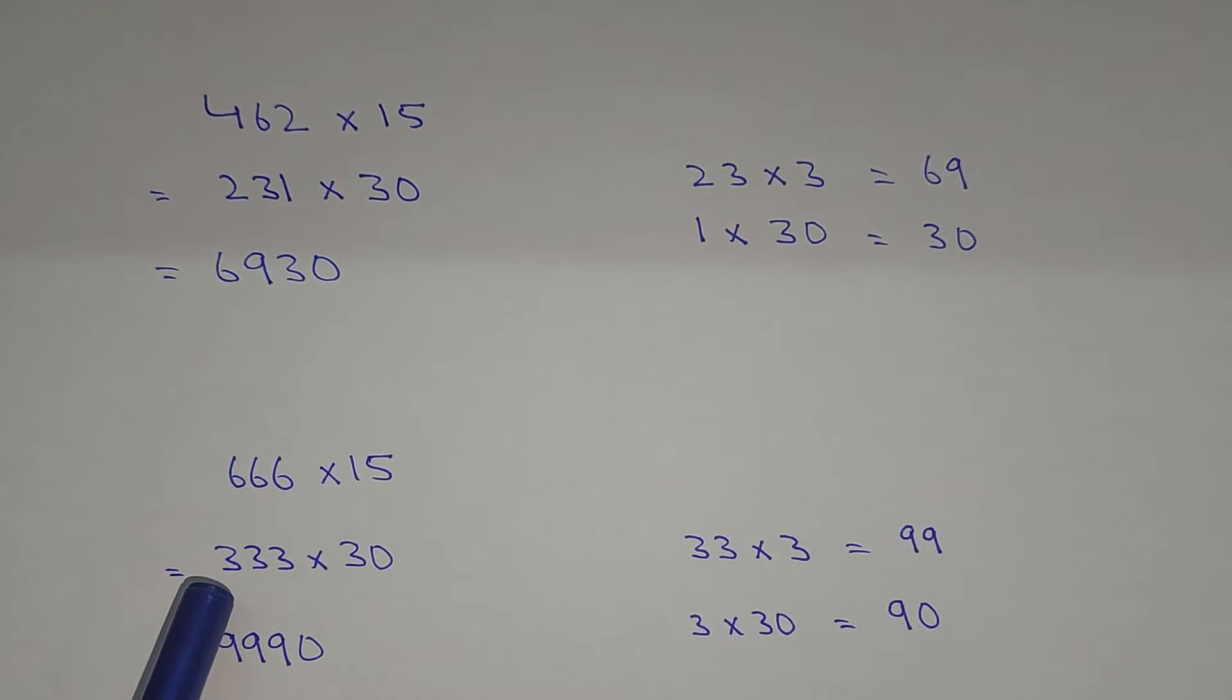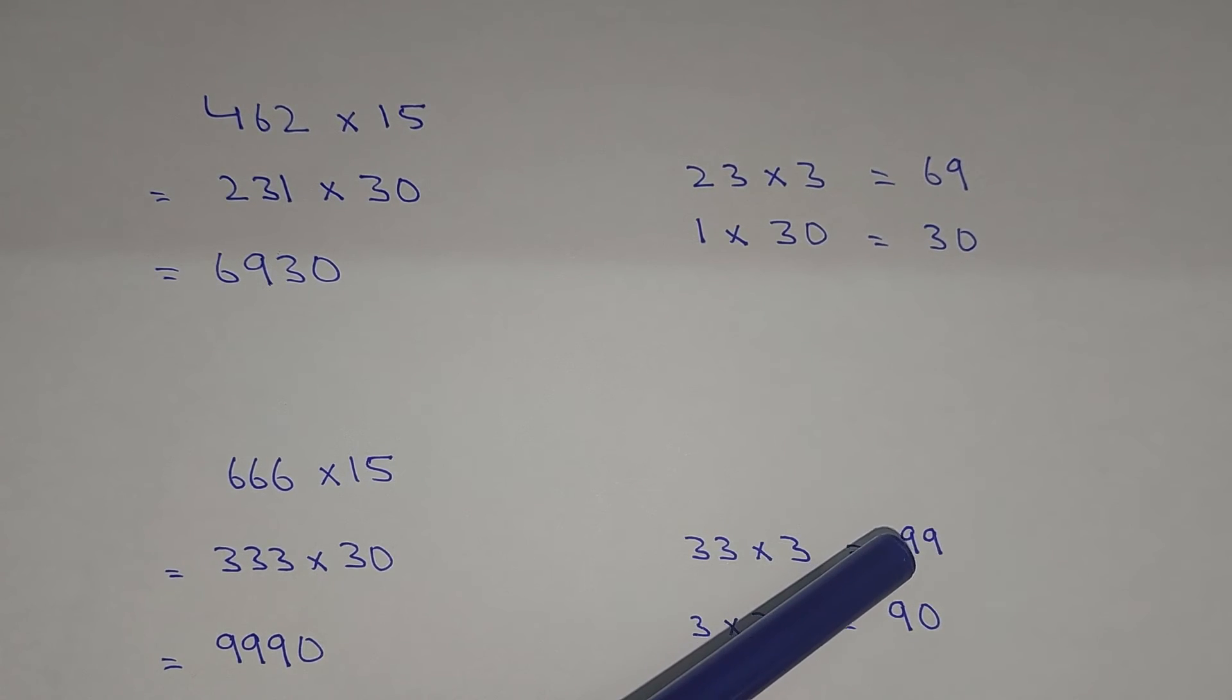Now 33 multiplied by 3 equals 99, and 3 multiplied by 30 equals 90. So 9990 is the answer. I hope you understand. Thank you for watching this video.